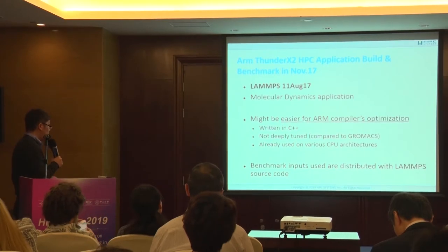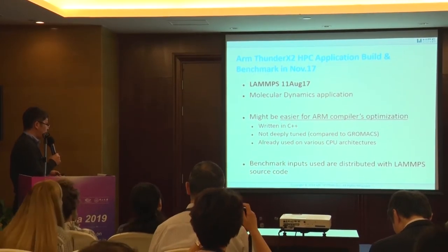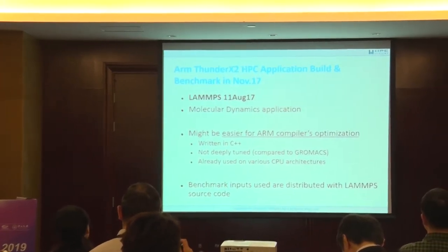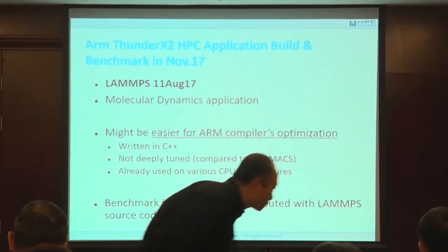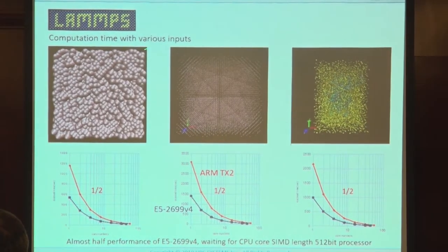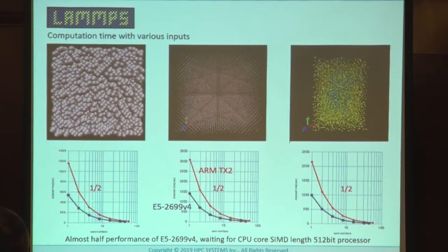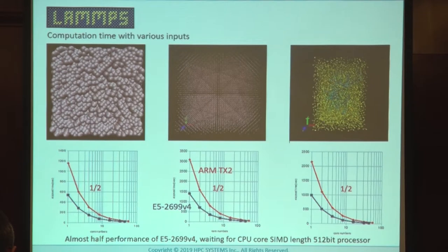We also benchmarked LAMMPS in November 2017 using various input configurations. This one also showed about half the performance of the reference, so we think we need to wait for the next generation — perhaps a 12-bit processor — before achieving equivalent performance.